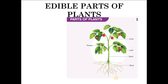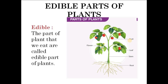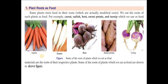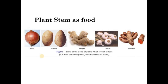Now let us see the edible parts of a plant. The main parts of a plant are root, stem, flower, leaf, and fruit. Any part that we consume is termed as an edible part. Starting with roots: carrot, radish, beetroot, sweet potato, and turnip are examples of roots we consume as food — these are actually modified roots. Some stems that we eat as food include onion, potato, ginger, garlic, turmeric, and sugarcane.